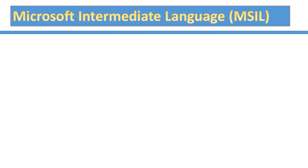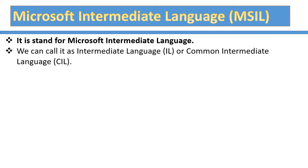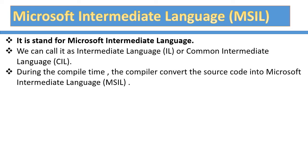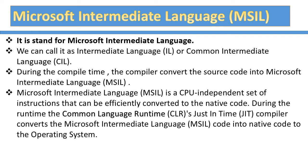MSIL stands for Microsoft Intermediate Language, also called IL or Common Intermediate Language, CIL. During compile time, the compiler converts source code into MSIL. MSIL is a CPU-independent set of instructions that can be efficiently converted to native code. During runtime, the CLR's just-in-time, JIT, compiler converts MSIL code into native code for the operating system. The MSIL and metadata are contained in a portable executable, PE, file.